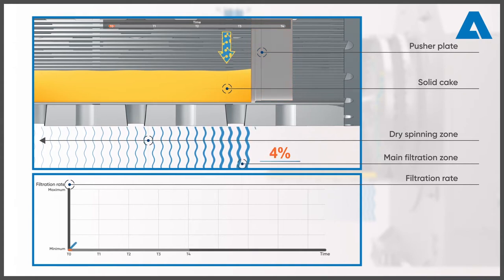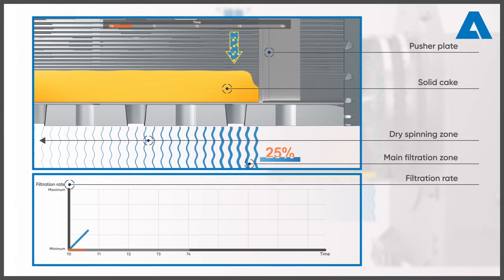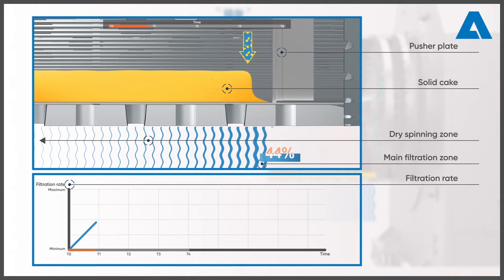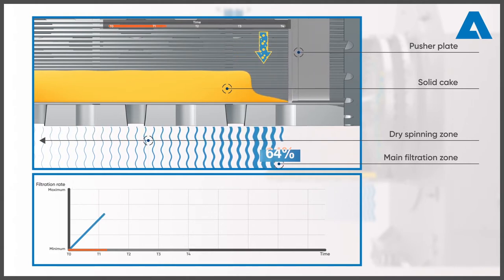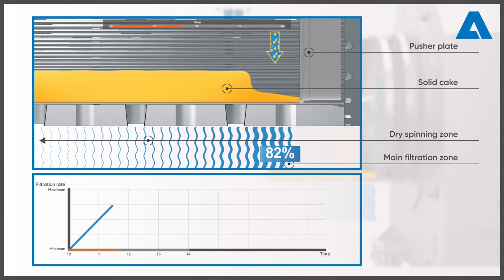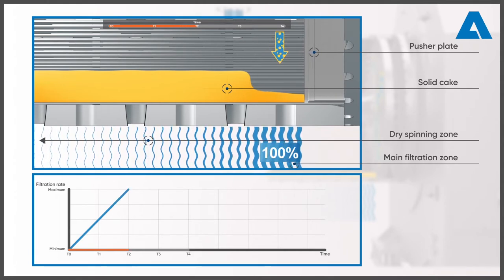The pusher plate now moves towards the right thus opening up the main filtration zone. More and more suspension lands directly on the free filter medium causing the filtration rate to rise continuously. While the filtrate is removed by the centrifugal force, the solids remain in the basket. This is how the filter cake is formed.